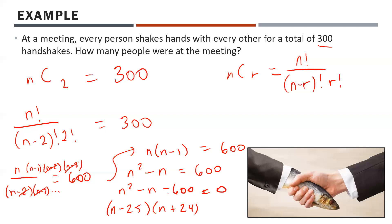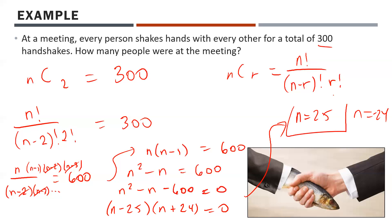There certainly aren't negative 24 people at this meeting, so there are 25 people. You can confirm this by calculating 25C2, which equals 300. Always check your work!